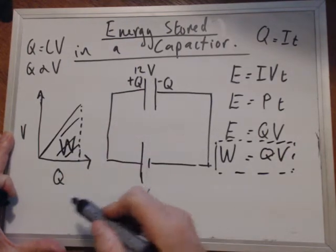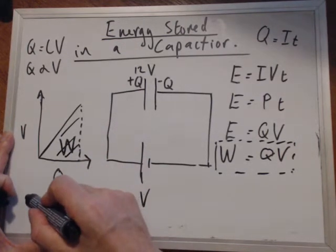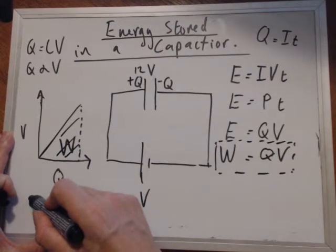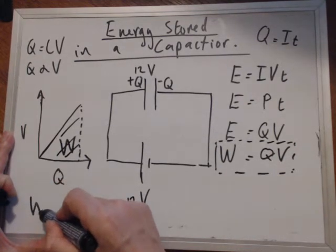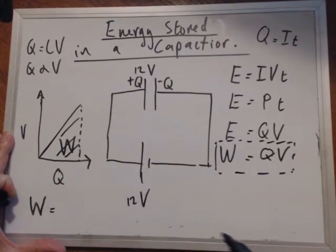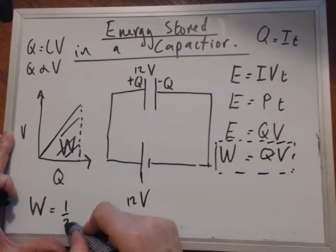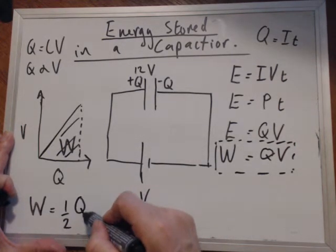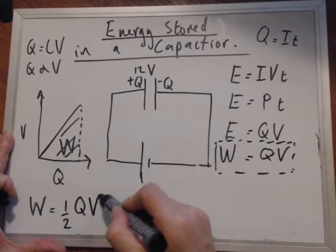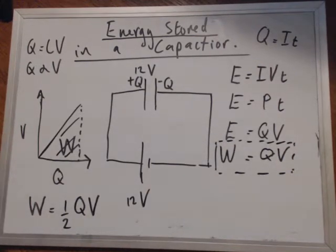And therefore, the work is, by the area, half the base times the height. So therefore, the work or the energy is equal to half of the charge times the voltage. And that is one of the energy equations.